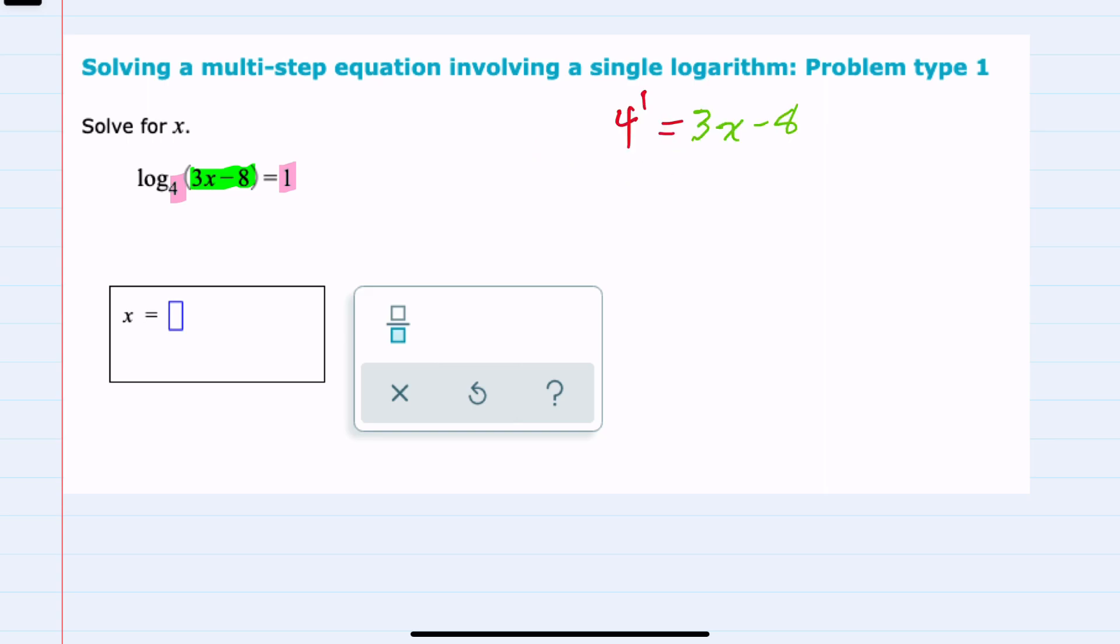From here, we can continue to simplify. 4 to the first power is 4, and then we can isolate the x by adding 8 over to the other side, giving us 12 equals 3x, and x equals 4.